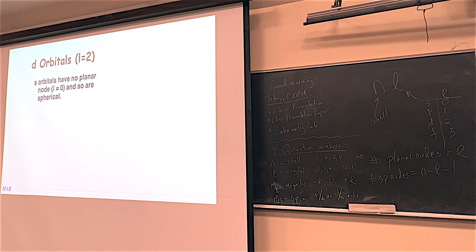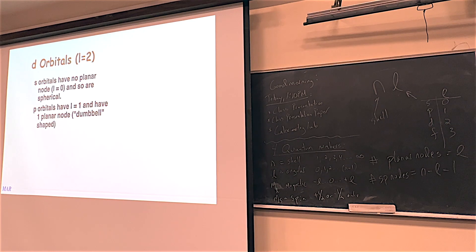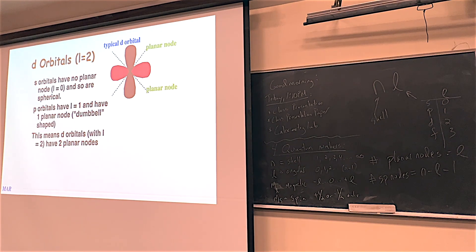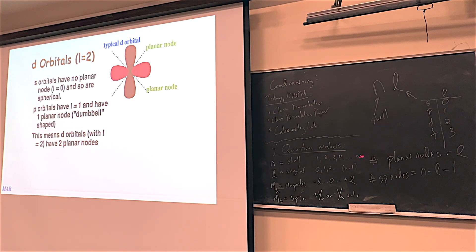S orbitals don't have any planar nodes, so they're spherical. P orbitals have one planar node — planar nodes equal L — and they look like a figure-8, sometimes called a dumbbell. When you get to D orbitals, each orbital is kind of like two figure-8s: one figure-8 one way and one figure-8 at 90 degrees. Most D orbitals look that way. Because L equals 2 with D orbitals, there are now two planar nodes — like two sheets of glass at roughly 90 degrees from each other.